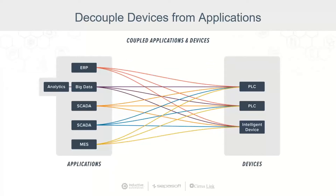Looking at a traditional architecture, one that is coupled together, we can see that applications are connected to those devices directly. Most of the time it would be SCADA talking to all those PLCs, and ultimately we might have another MES system talk to the PLCs, or we might have other business systems talk to our SCADA and make it middleware — but it's not really designed for that.